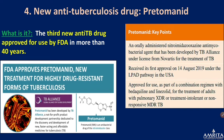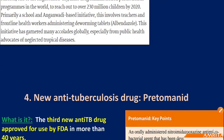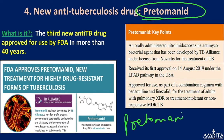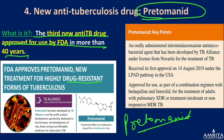Next is a new anti-tuberculosis drug. A question can come on Pretomanid — why it was in the news. It is a new TB drug approved for use by the FDA in more than 30 to 40 years, and it is effective against drug-resistant forms of tuberculosis.